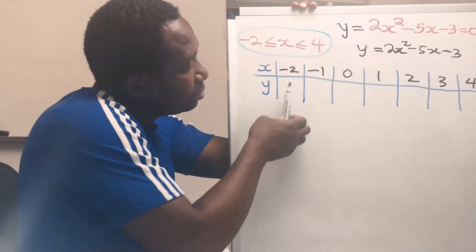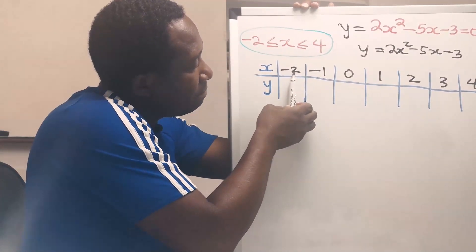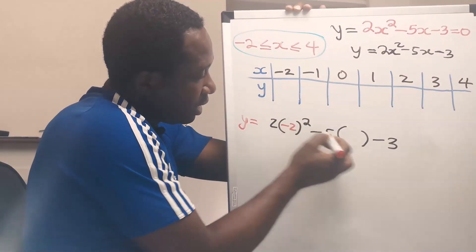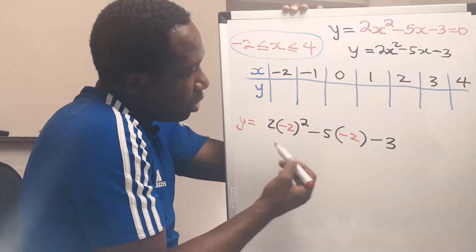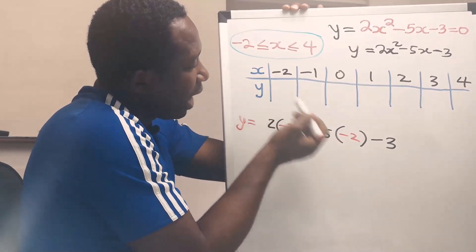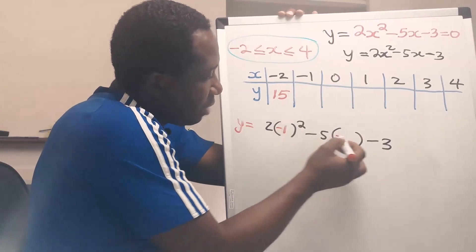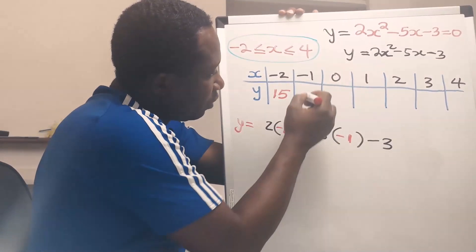I will substitute x equals minus 2 into this function. When x is minus 2, y is 15. When x is minus 1, y will give us 4.